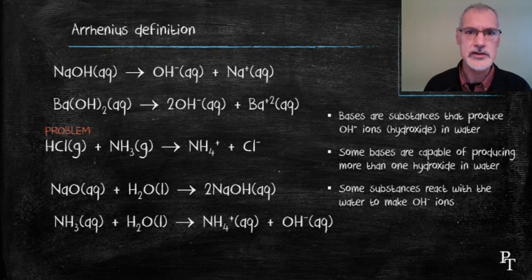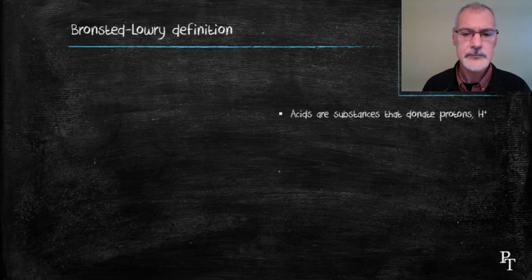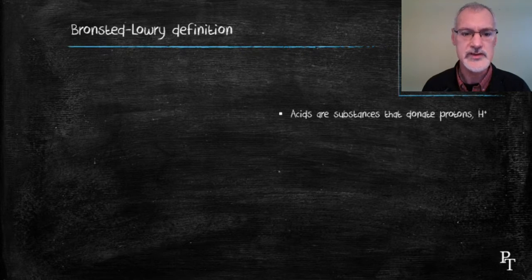For that, we need to expand our definition. And this was the work of Johan Brønsted and Thomas Lowry. They defined acids as substances that donate hydrogen ions or protons, a hydrogen essentially stripped of its electron.